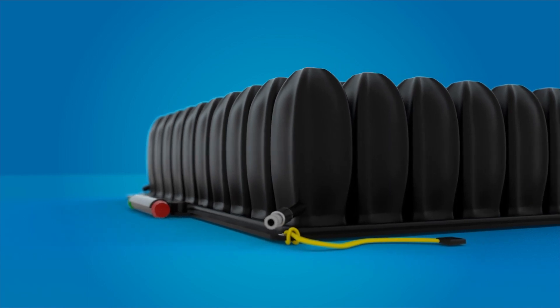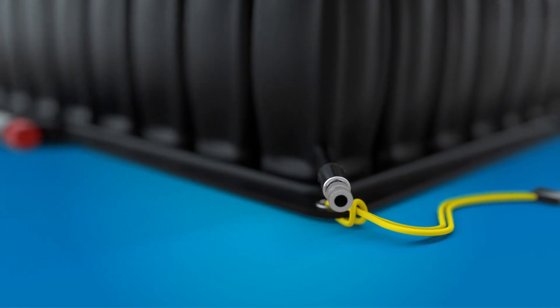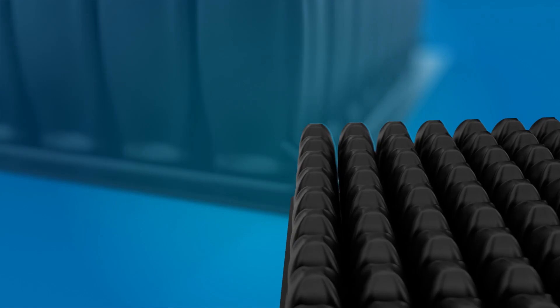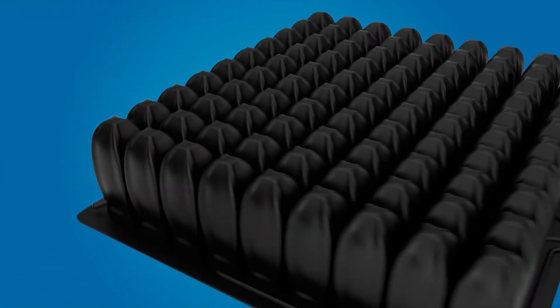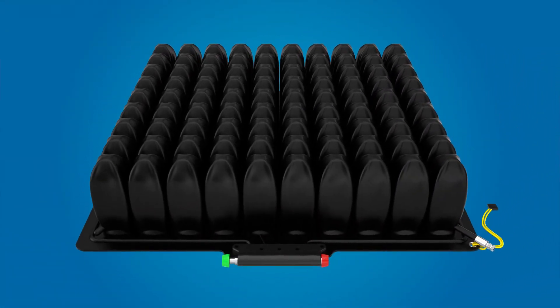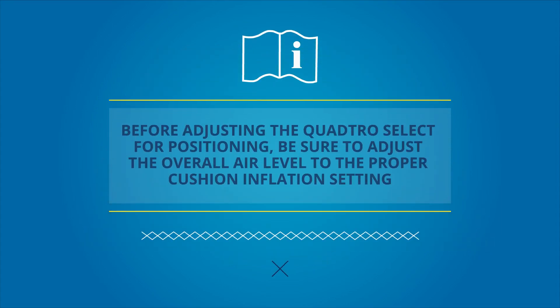Positioning with the ROHO QuadroSelect Cushion. The QuadroSelect Cushion allows for correction or accommodation of lateral and/or anterior-posterior asymmetries of the pelvis and upper legs through adjustment of the inflation level in each quadrant. Before adjusting the QuadroSelect for positioning, be sure to adjust the overall air level to the proper cushion inflation setting.